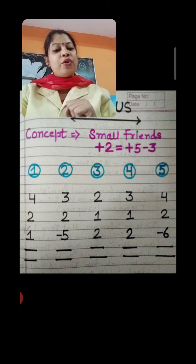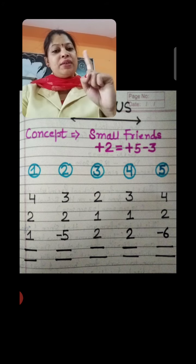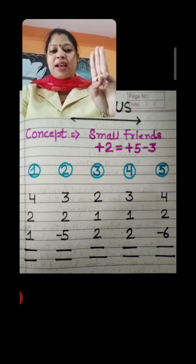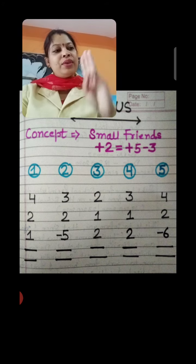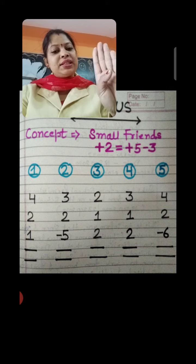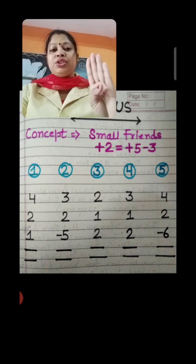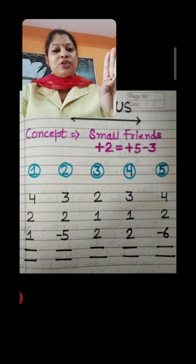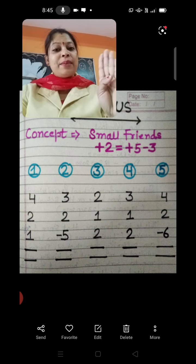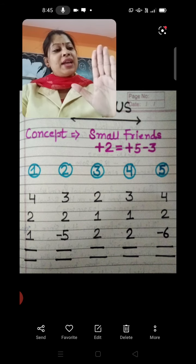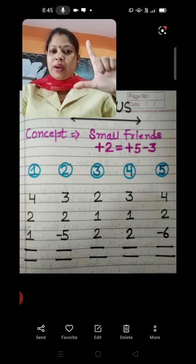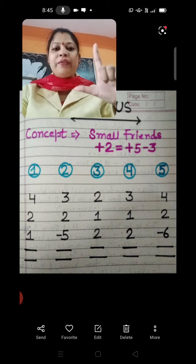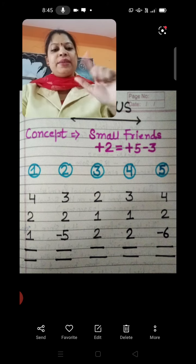Question number 4: plus 3 — 1, 2 and 3, so 3 fingers up. Then plus 1 — 1 finger up. Then plus 2, but we don't have any finger and we need 2. So now we will use the best friend of 2: thumb outside and 3 fingers down. Only 6 fingers left, so the answer is 6.